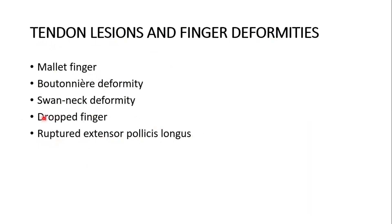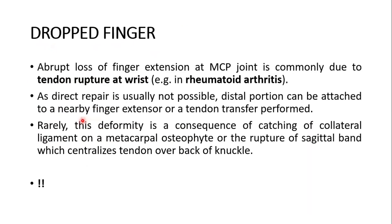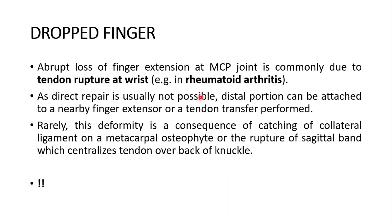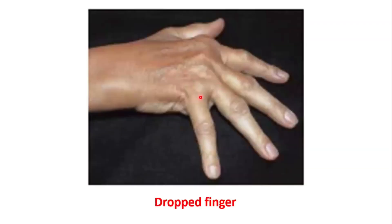First of all, I will discuss with you dropped finger. Drop finger is the abrupt loss of finger extension at the metacarpophalangeal joint, commonly due to tendon rupture. For example, in rheumatoid arthritis, you can see the drop of the finger at the metacarpophalangeal joint — it becomes straight and there is a loss of finger extension. It is in flexion and cannot be extended.